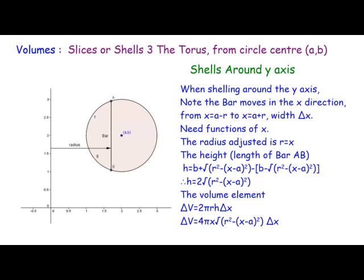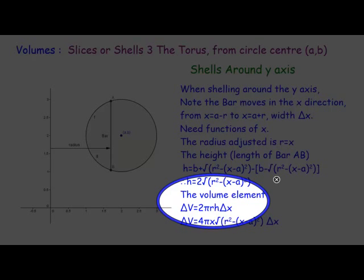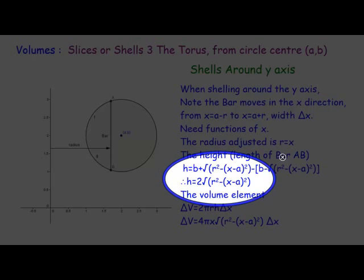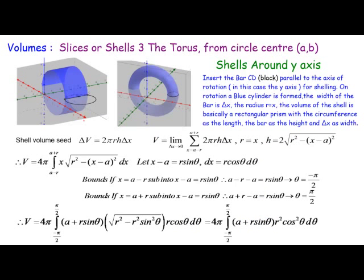I've done a few calculations for the height. We're going to use this in the volume element — r is just x in this case, and the height is the expression we derived. We need to substitute all this into the integration. Again, we're going to need a trig substitution: let x − A = R sinθ, dx = R cosθ dθ. We change the x-bounds from A − R to θ-bounds: the bottom is −π/2 and the top is π/2. We get a reasonably complicated integral, but again we can use the properties of odd and even functions.